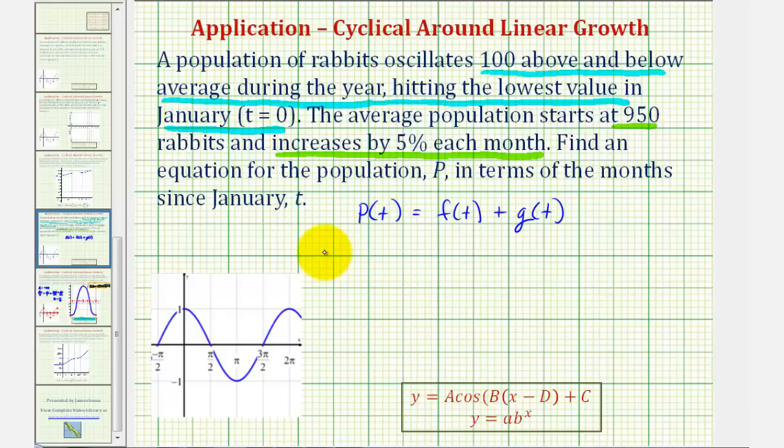So again, now we know that p of t is equal to f of t plus g of t, where f of t is negative 100 times cosine of pi divided by six times t plus g of t, where g of t is the exponential growth part of our equation. Which we'll write in the form of y equals a times b to the x, where a would be the initial value, and b would be the base of the exponential function.